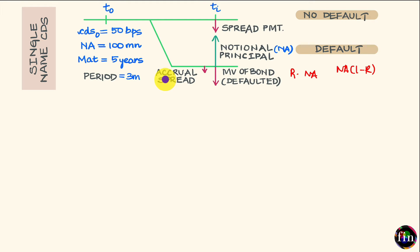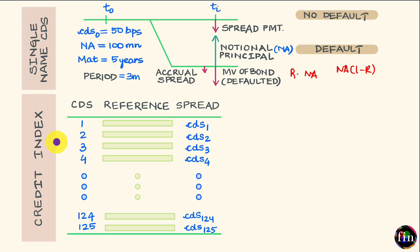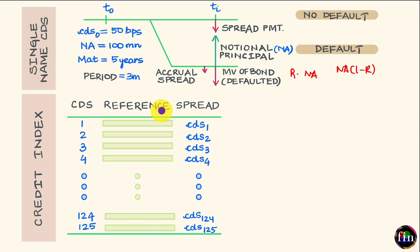Now let's come to an index credit default swap. A credit index is essentially a credit default swap based not on a single name, but rather on a basket of names. To create a credit index, we pull together a pre-specified number of reference names based on a pre-specified set of criteria. These reference names underlying our credit index are referred to as the reference portfolio. The key attraction of a credit index is that it allows you to buy or sell protection on all these reference names using a single transaction.